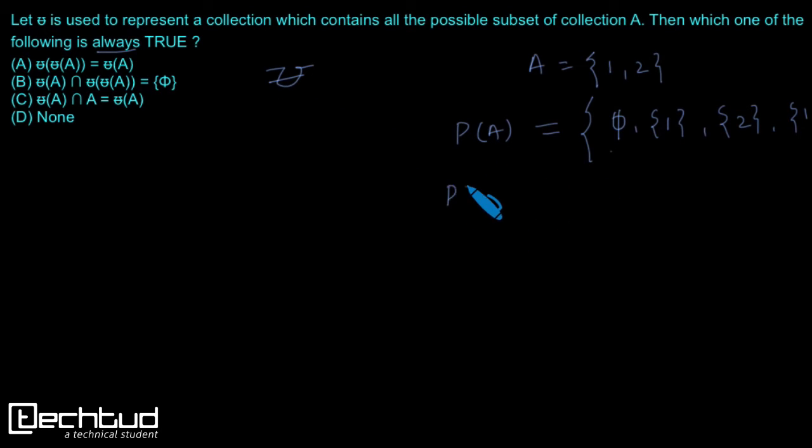Then again, it will be collection of all the possible subsets of these elements. And what is the element of this set? If we consider P(A) as a set then what is the element? It is a set again. So here what will be P(P(A))? Phi, then {1} but double bracket. What does it mean? It means that it is a subset whose element is again a subset.